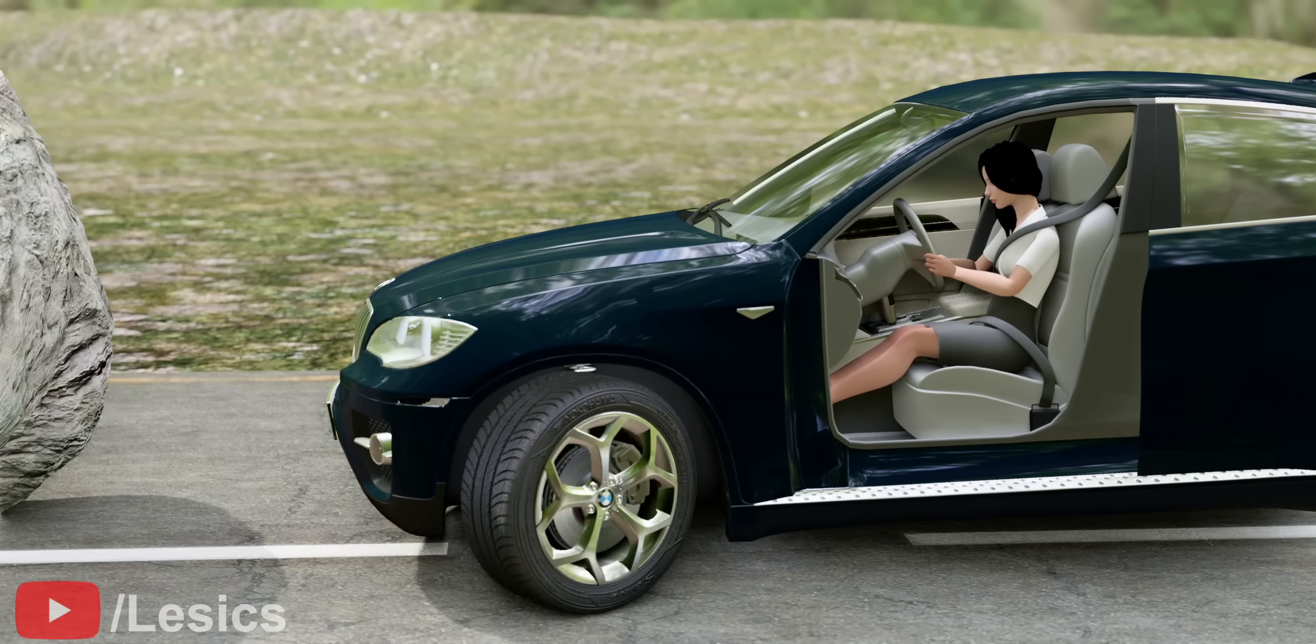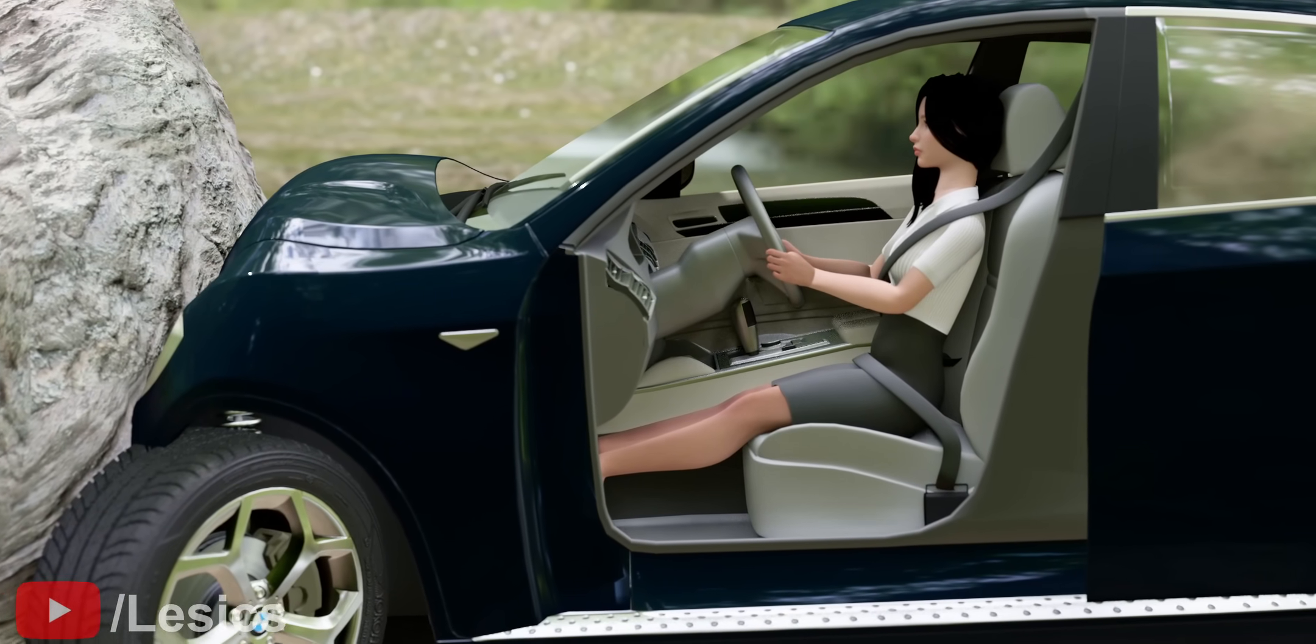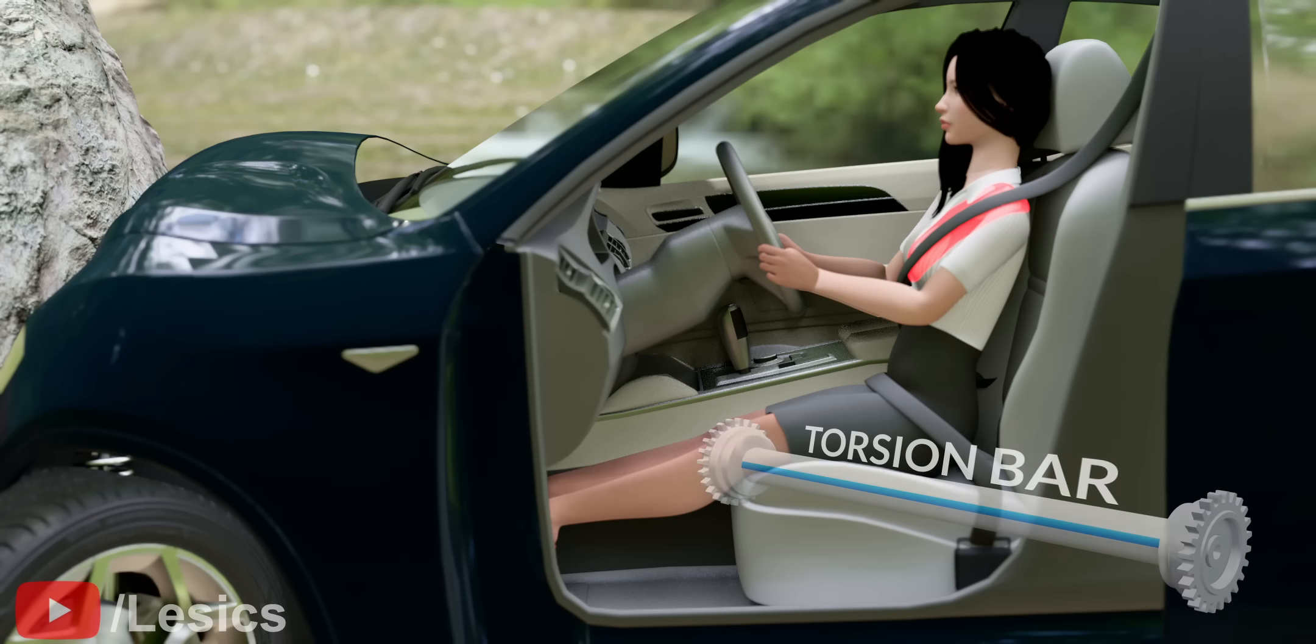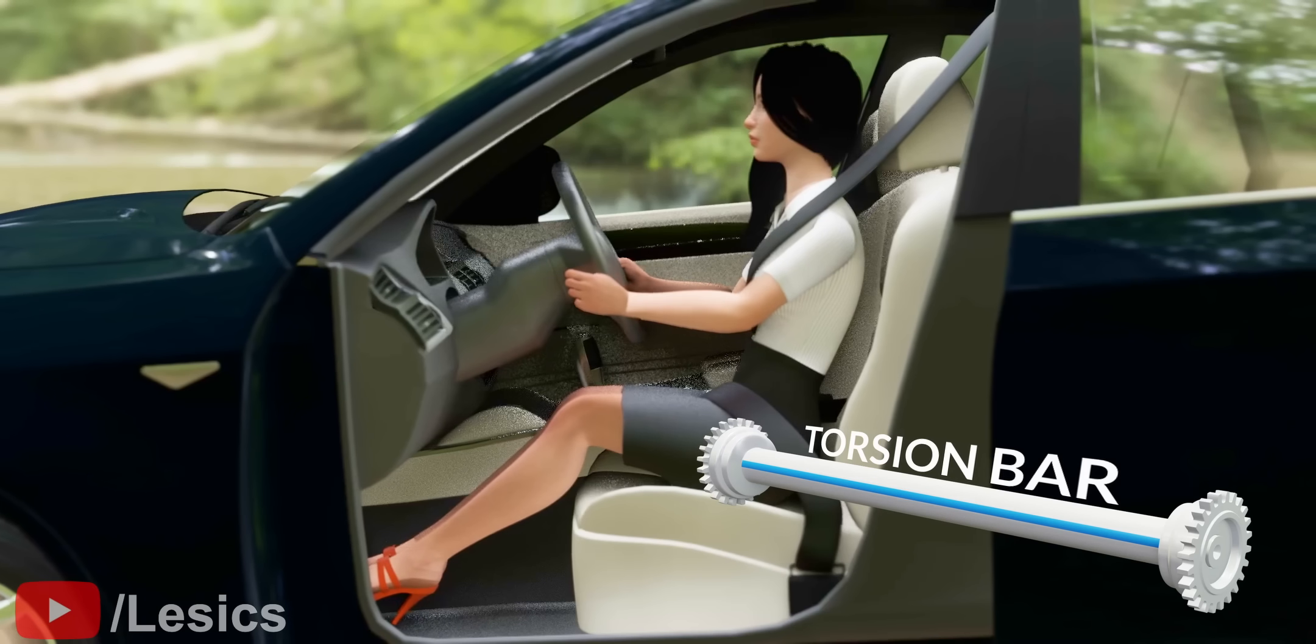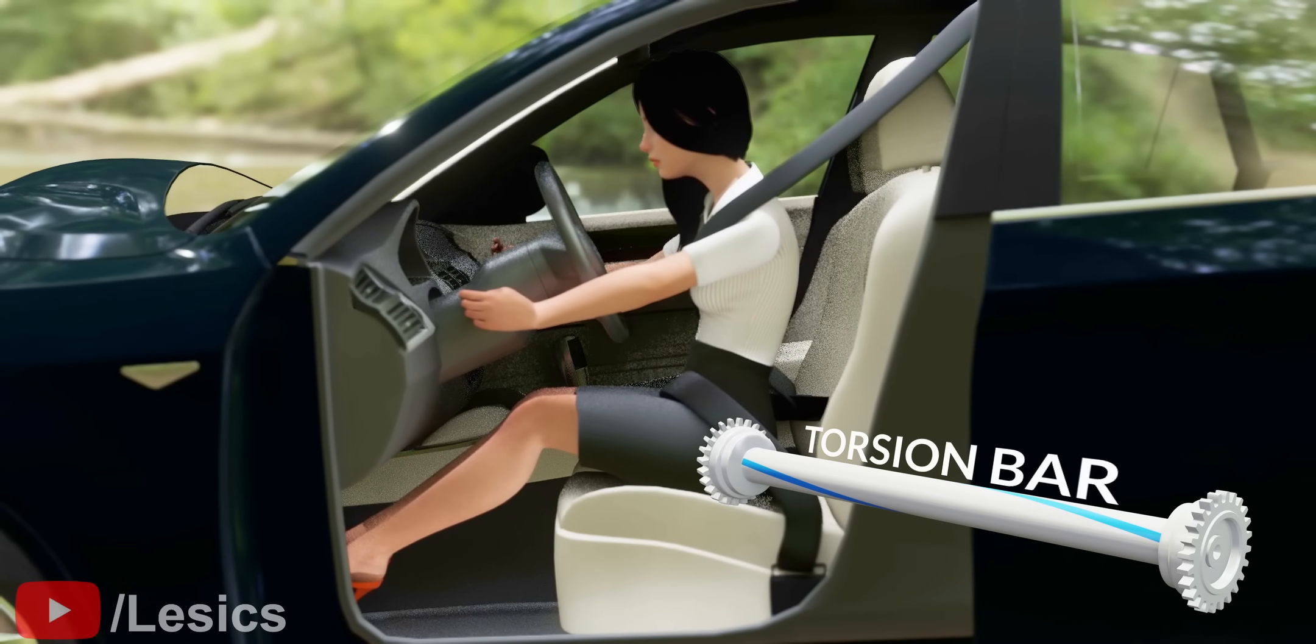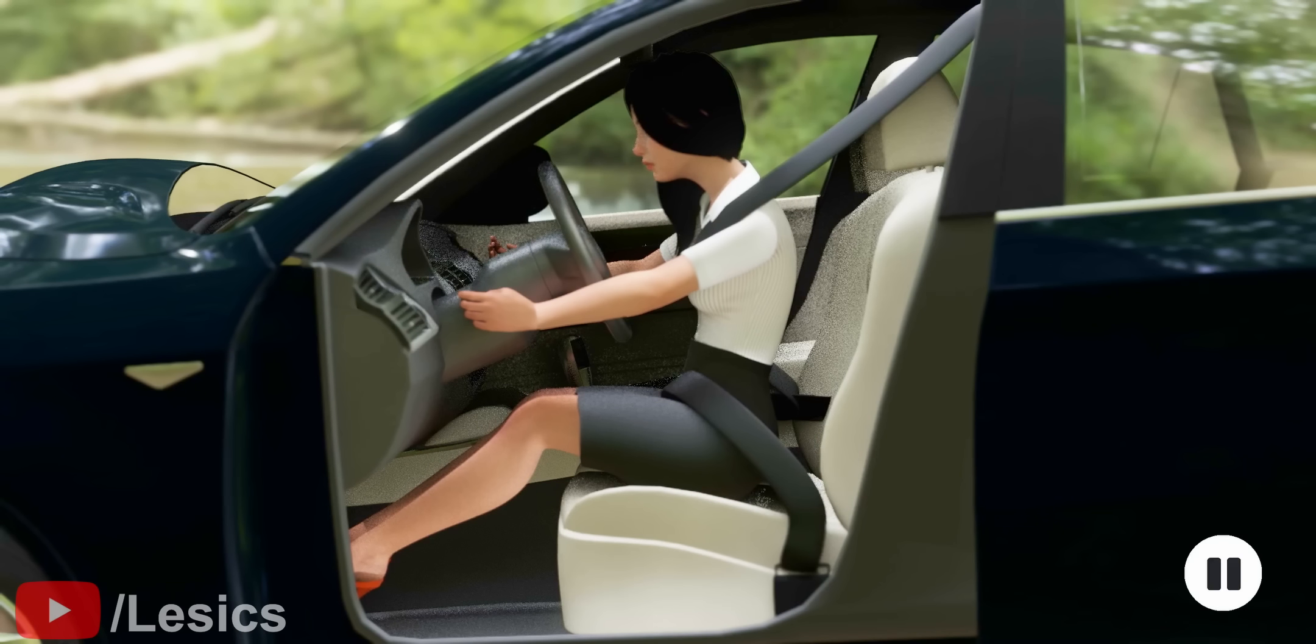Seatbelts are supposed to hinder the movement of a human body. However, during accidents, such seatbelts exert huge force on your chest area and can cause internal organ injury. To avoid this huge force on the chest, modern seatbelts slightly release the seatbelt with the help of a torsion bar. This action makes the upper body slightly move forward, but once the torsion bar is done with the belt release, the upper body's movement is arrested here. Let's pause here and analyze the physics of the accident in detail.